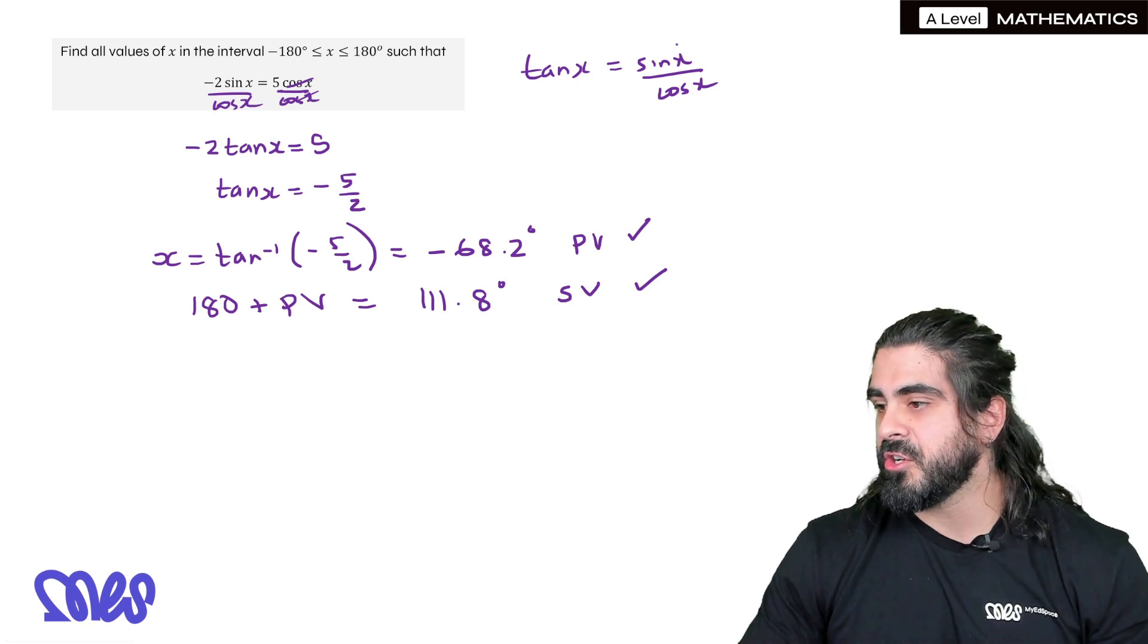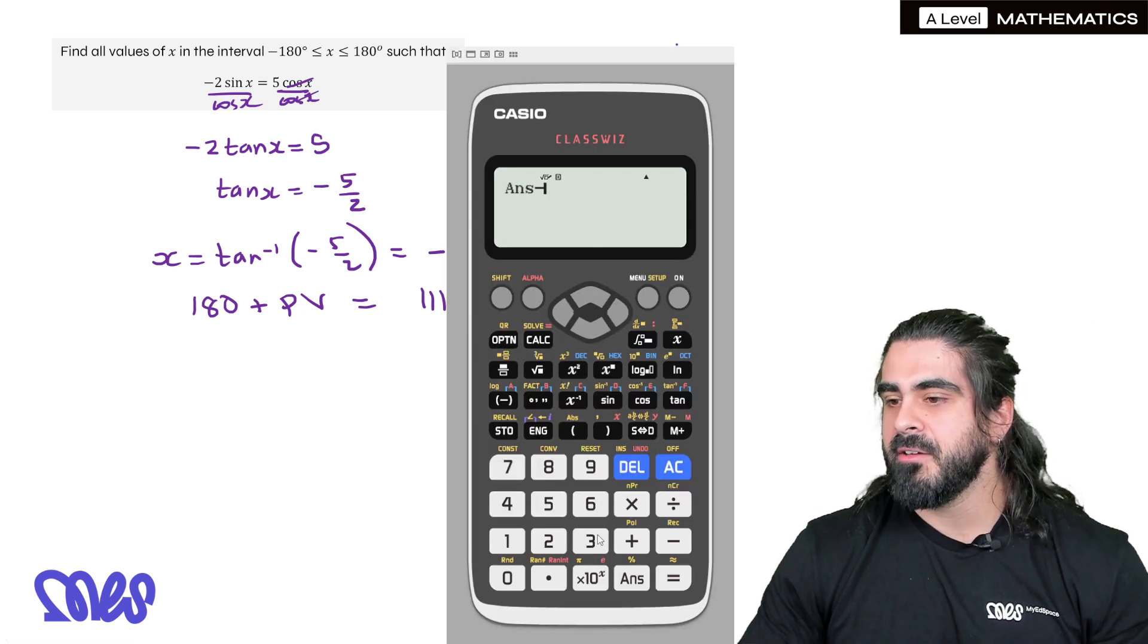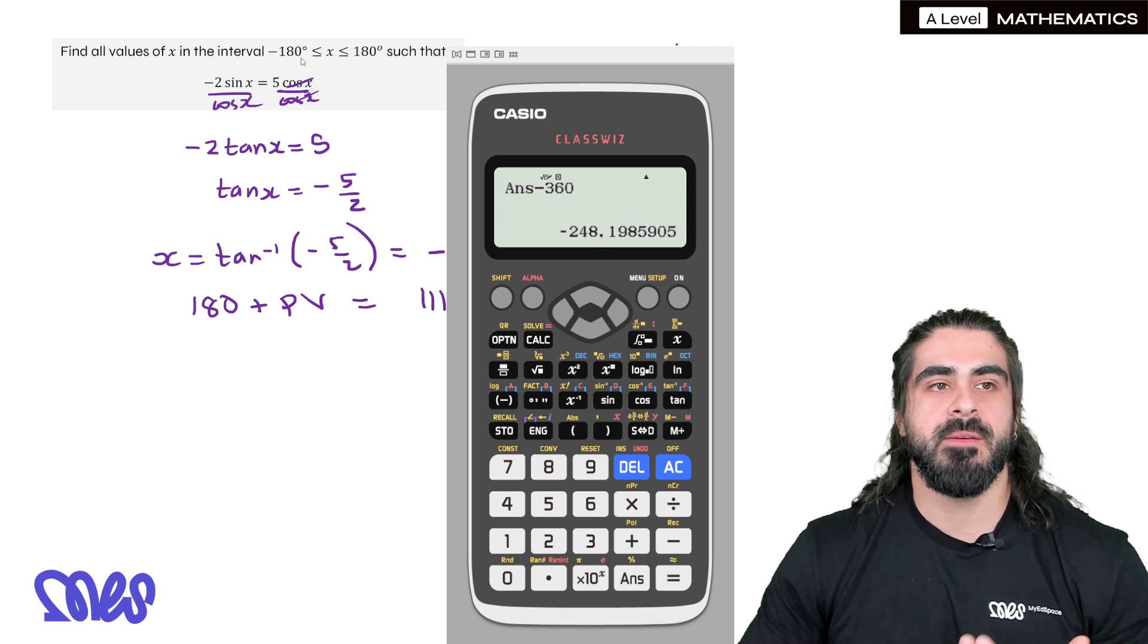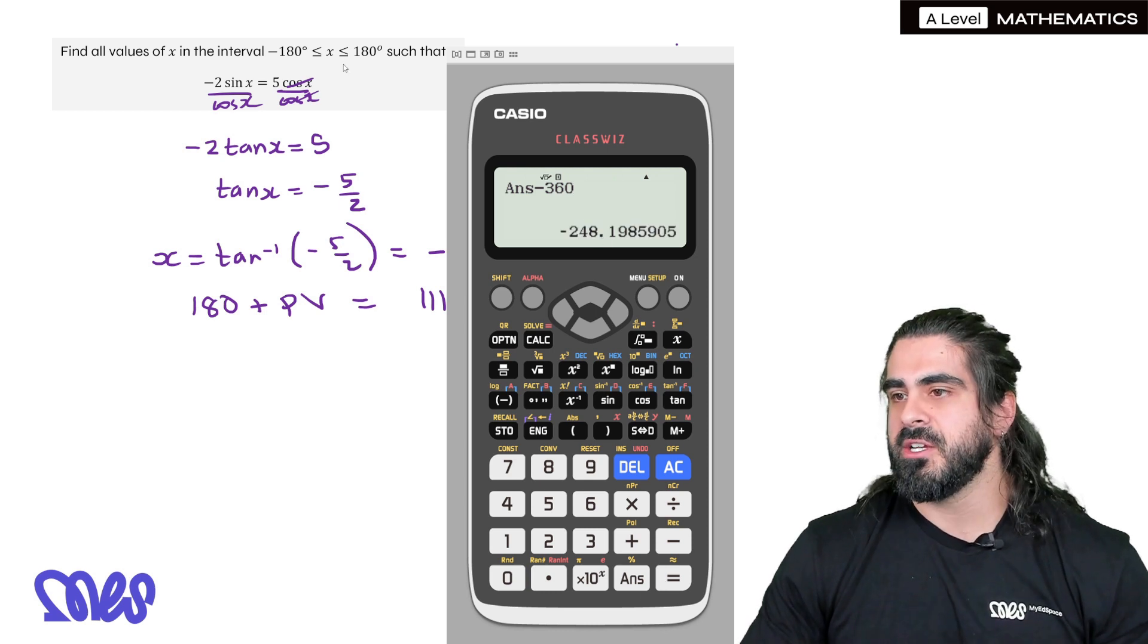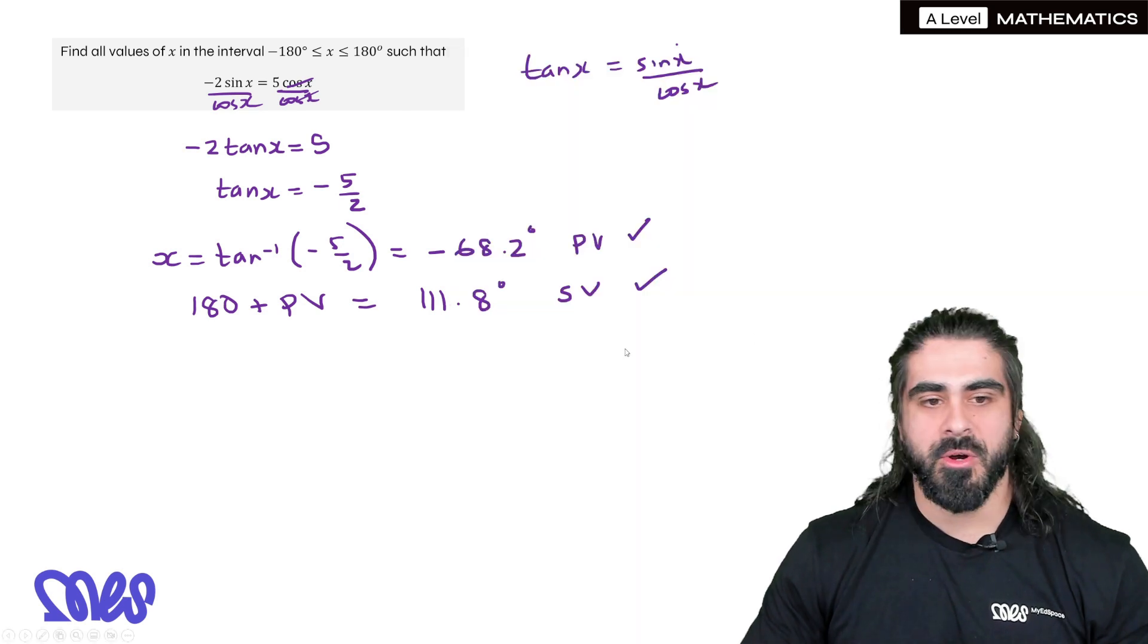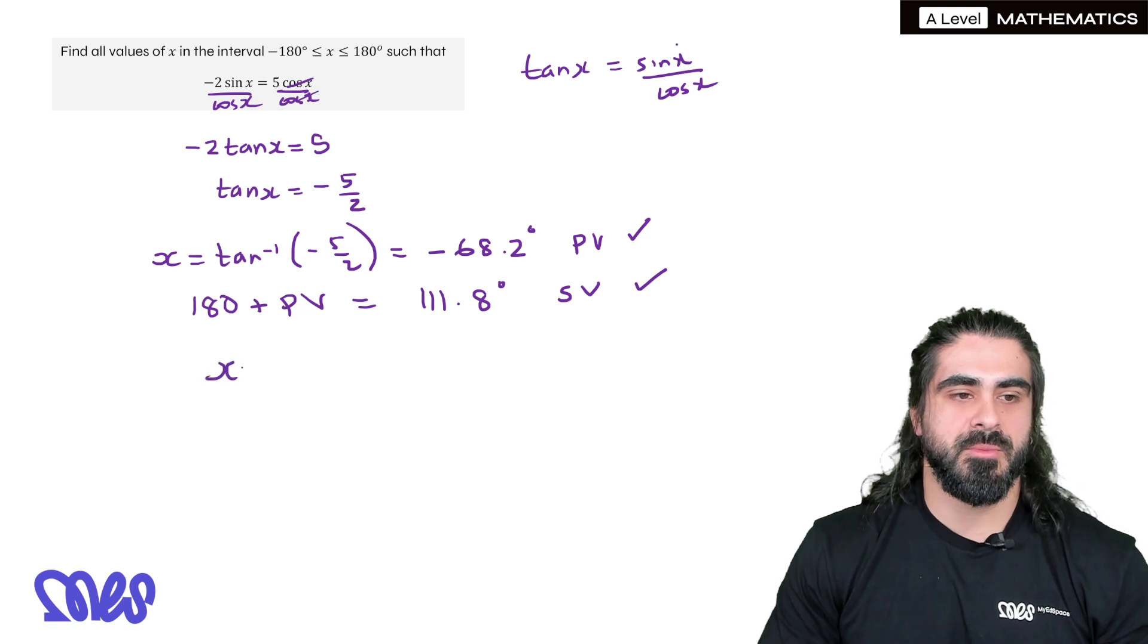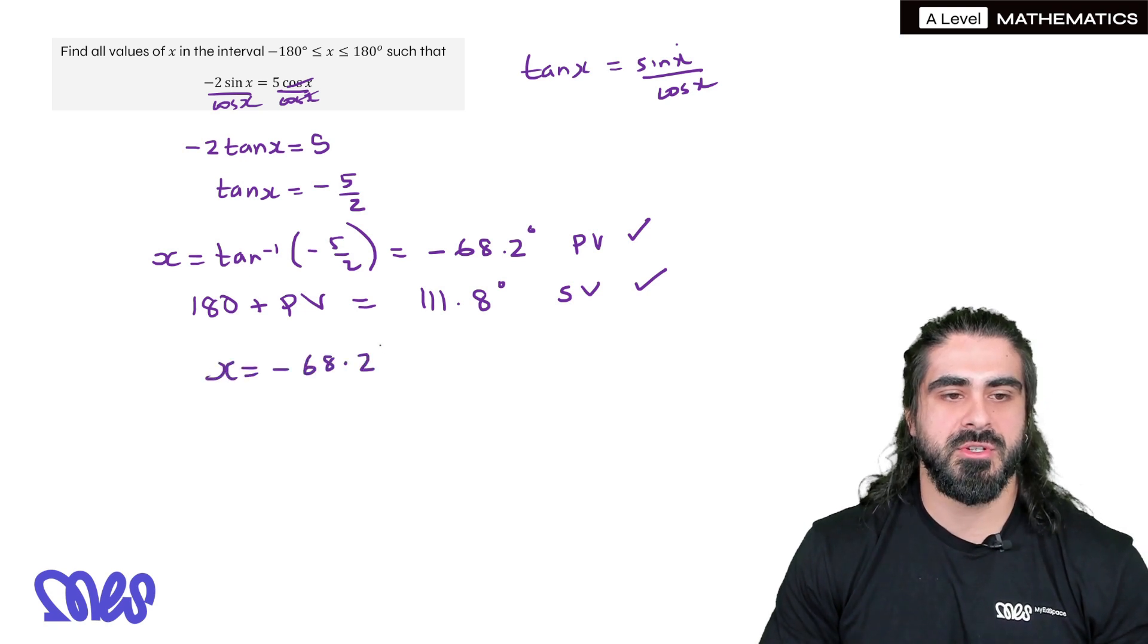You definitely don't want to minus 360 from that. With 111.8, you definitely don't want to add 360. But you can always check. I mean, it's not going to be in the range, but you have this number. If you minus 360, you can see that's out of the range. The lower limit there is minus 180. So it's not going to do anything for us. So in this case, our only two solutions are to one decimal place minus 68.2 and 111.8.